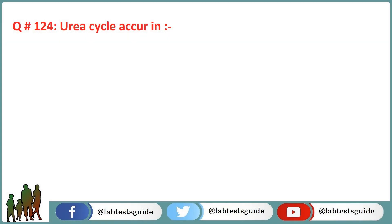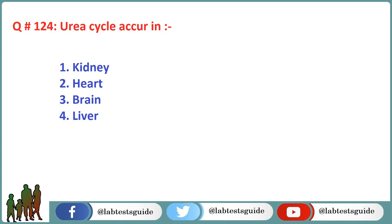The next question is 124: Urea cycle occurs in? Option 1: Kidney. Option 2: Heart. Option 3: Brain. Option 4: Liver. The correct answer is Option 4: Liver.